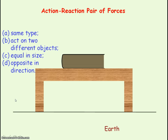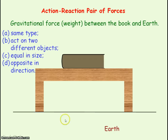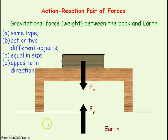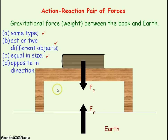Consider a book resting on a table and the action-reaction pairs acting on it. The weight of the book is the gravitational force acting on it due to Earth. The equal and opposite force is the gravitational force the book exerts on Earth. These forces are the same type — both gravitational — acting on two different objects: one on the book and one on Earth. They are equal in size and opposite in direction, so they obey the four rules for an action-reaction pair.